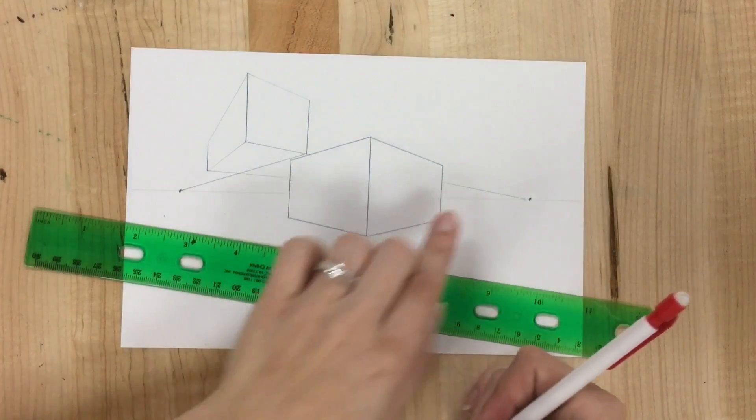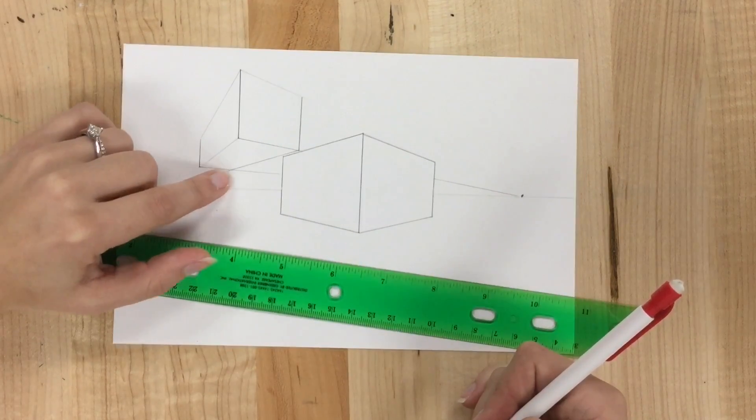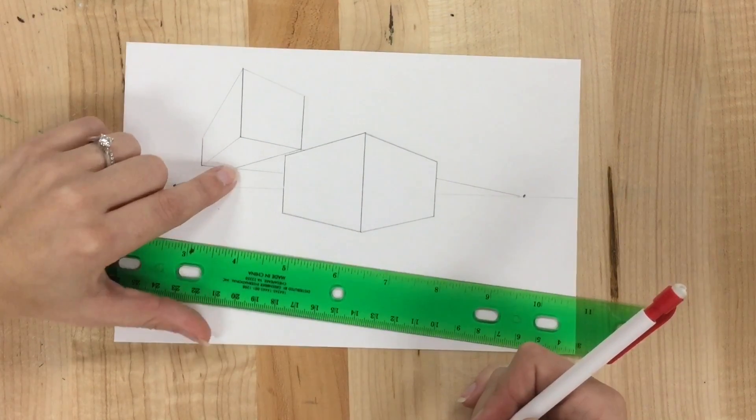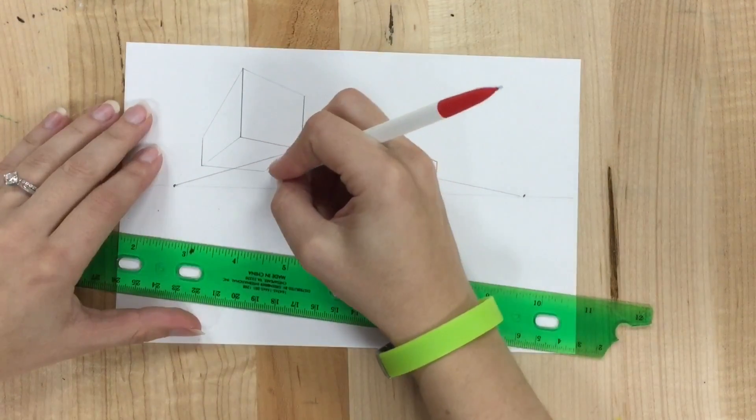Now I am not going to extend it because I know that I'm going to get rid of part of this because where these two lines cross is where that far away corner is. So now I can get rid of anything that extends past that crossing point.